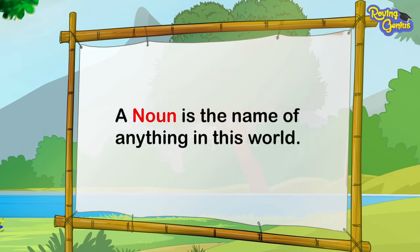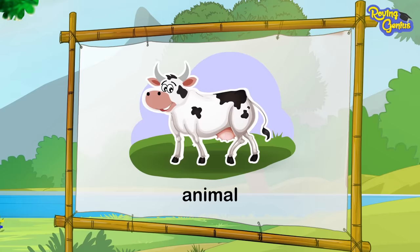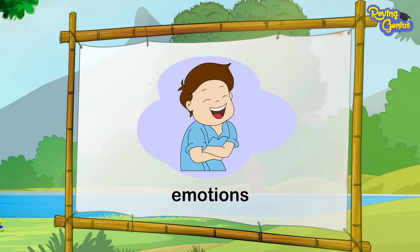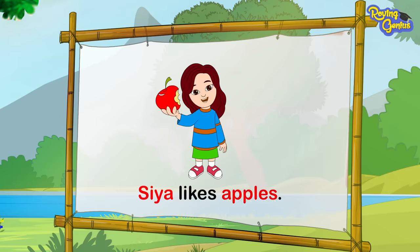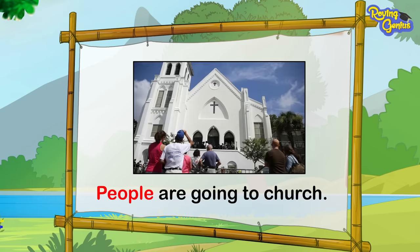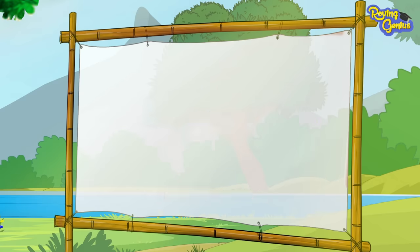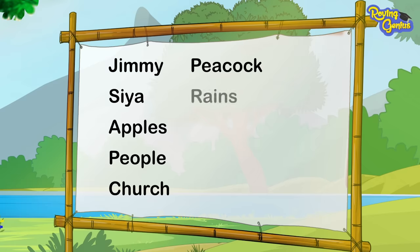A noun is the name of anything in this world — be it person, place, animal, thing, idea, or emotions. For example: Jimmy is playing. Sia likes apples. People are going to church. Peacock is dancing in the rains. Our pet gives us joy. Here, Jimmy, Sia, apples, people, church, peacock, rains, pet, and joy are nouns.